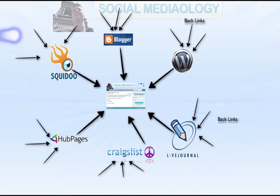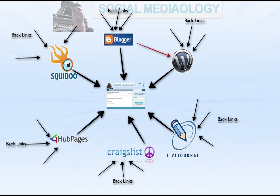You can take this even further by creating what's called a link tree, and turn it into a link wheel by linking from Blogger to WordPress, from WordPress to LiveJournal, from Craigslist to HubPages, and so on. You don't want to link back in the other direction — you want one-directional links only.